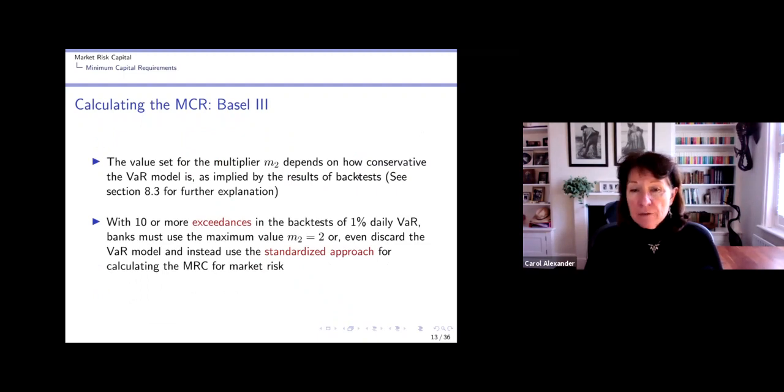So the value for M2 depends on the backtests. And in particular, with 10 or more what we call exceedances in the backtests of 1% daily VaR, you have to have M2, which is 2. Or you may not be allowed to use your value-at-risk model at all. And you might have to use standardized rules, like the original standardized rules for credit risks. There are standardized rules, instead of using internal VaR models, that can be applied if your VaR model isn't good enough.